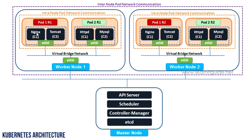The second type is pod-to-pod communication. Each pod gets its own IP address from the local host network. There are two scenarios. The first is intra-node pod networking — communication between pods running on a single worker node. By default, pods on the same worker node can communicate because they share the same host virtual network, with each pod having a different IP address assigned from the local network.